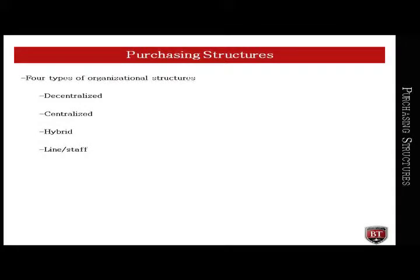Within a company, especially very large organizations, the purchasing department can have an internal structure where the functions of the department are divided into multiple units. There are four types of organizational structures within purchasing: decentralized, centralized, hybrid, and line or staff.